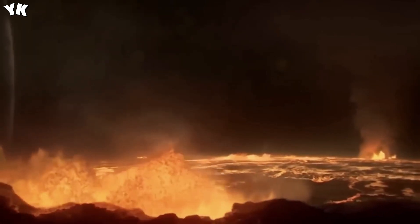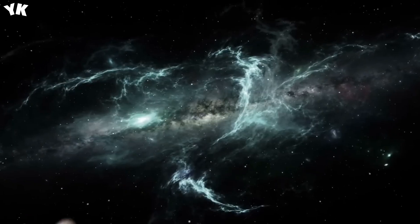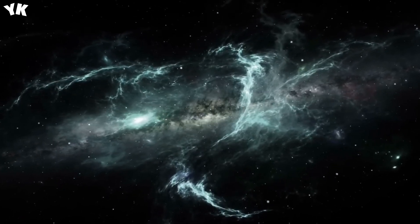The exoplanet named HIP 65426b is a colossal gas giant, roughly 12 times the size of Jupiter and located 100 times farther from its star than Earth is from the Sun. It's an extraordinary find that showcases the power of Webb's technology.